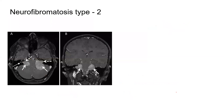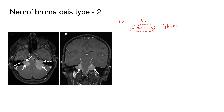Now we will discuss neurofibromatosis type 2. It is caused by mutation in the NF2 gene, which is present on chromosome 22, and codes for a protein known as Merlin. Merlin is a cytoskeletal protein that interacts with actin to maintain cell shape, structure, and adhesion. It is also autosomal dominant, but much less common than NF1 — incidence is 1 in 40,000 to 50,000.